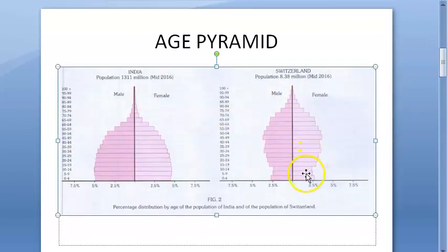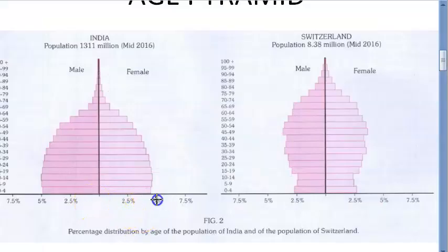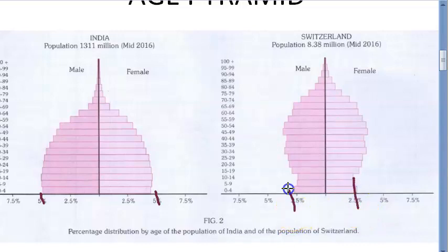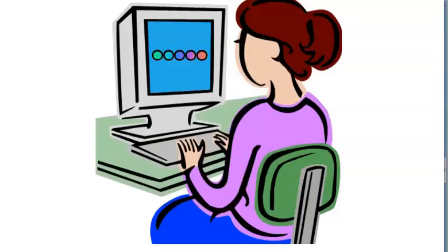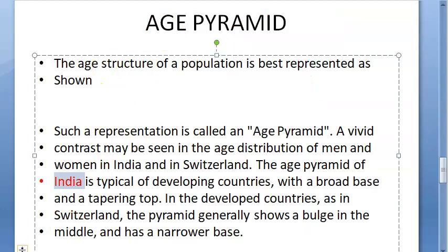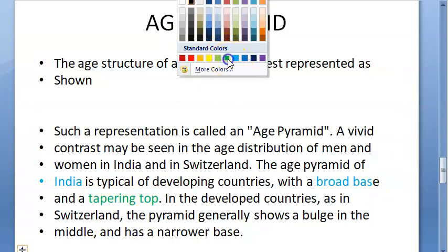Looking at females specifically — in India females are less than five percent at the base, while in Switzerland male and female births are equal. Switzerland is not producing many children overall. So India has a broad base and a tapering top.